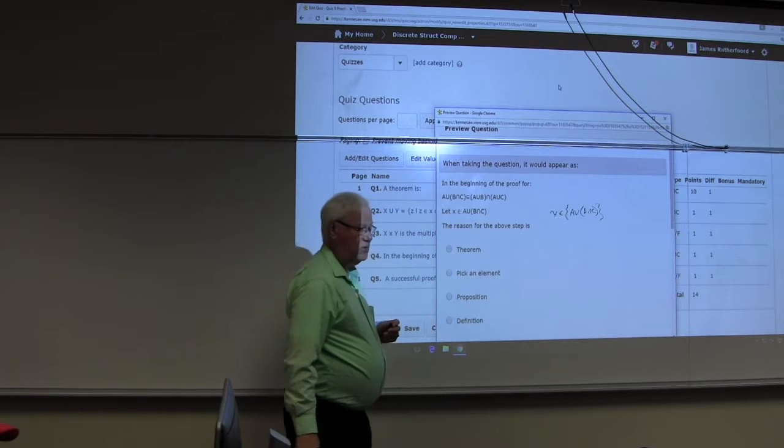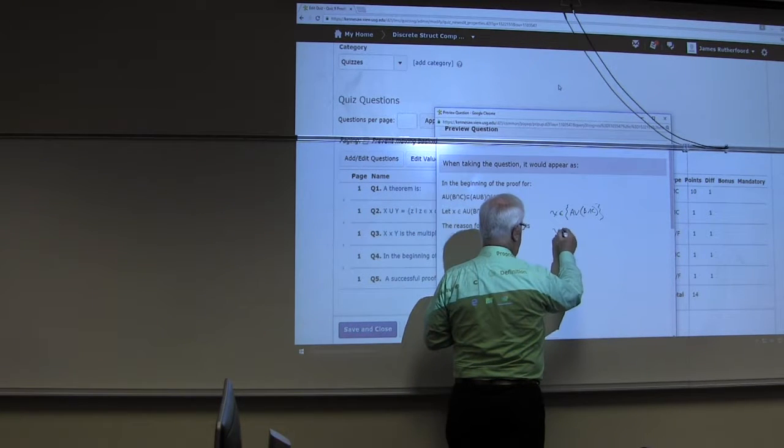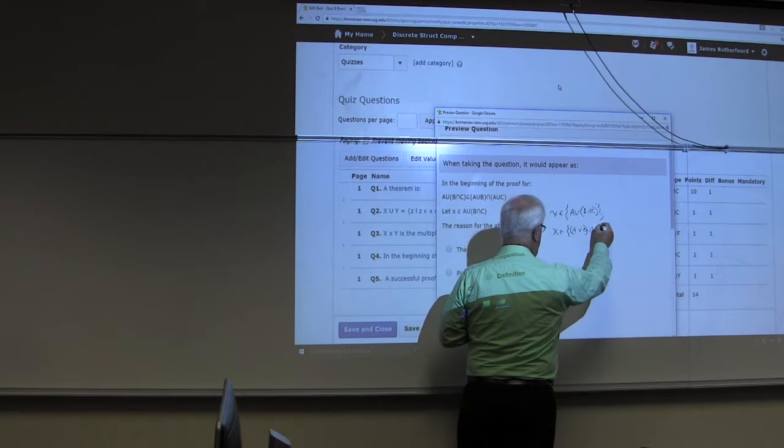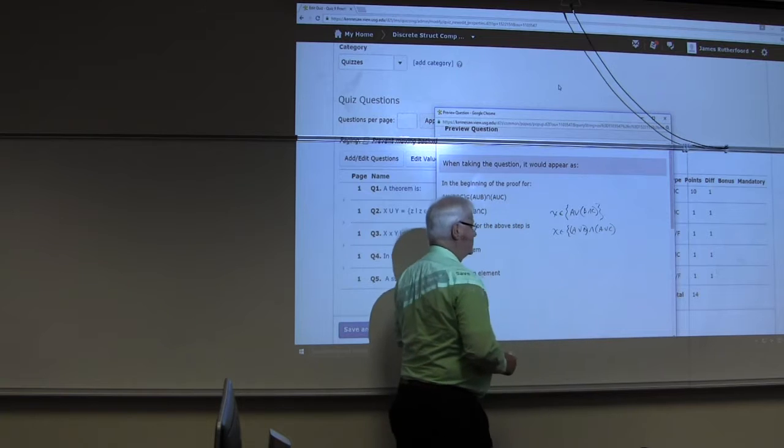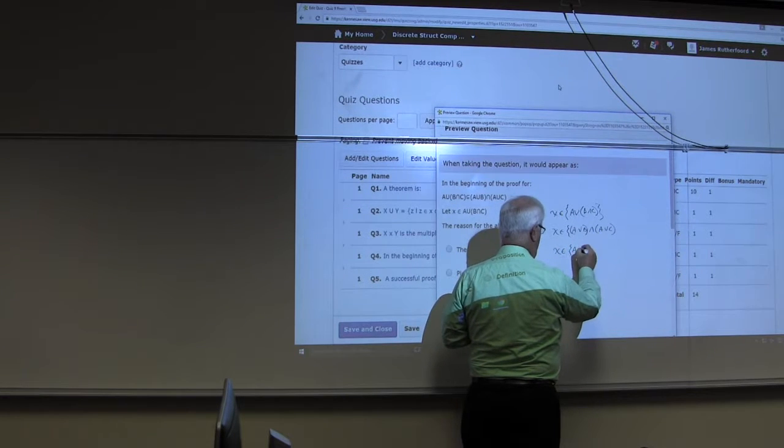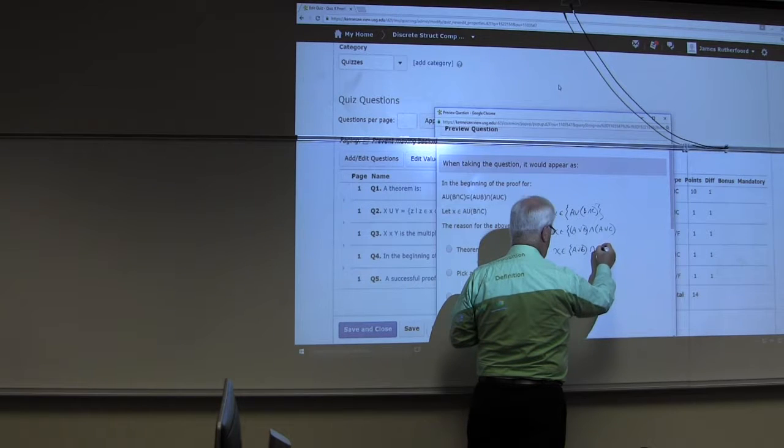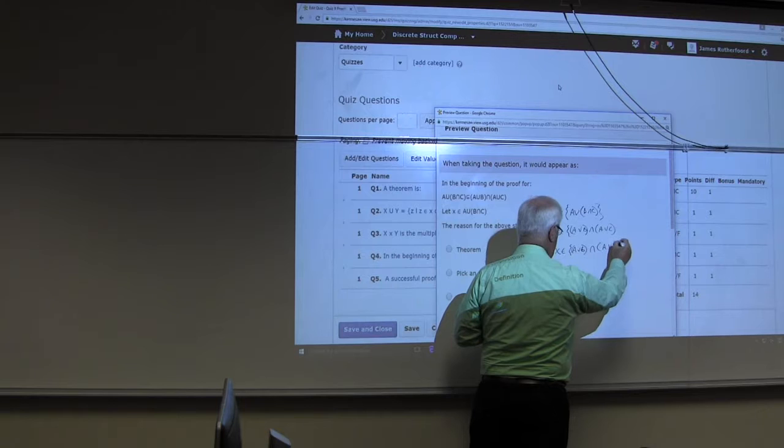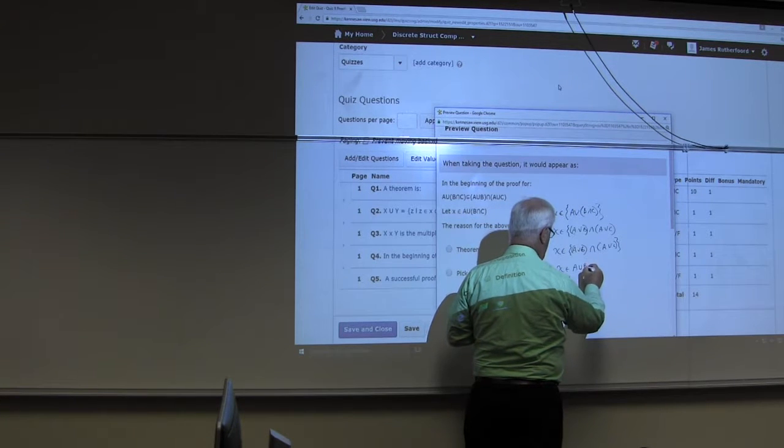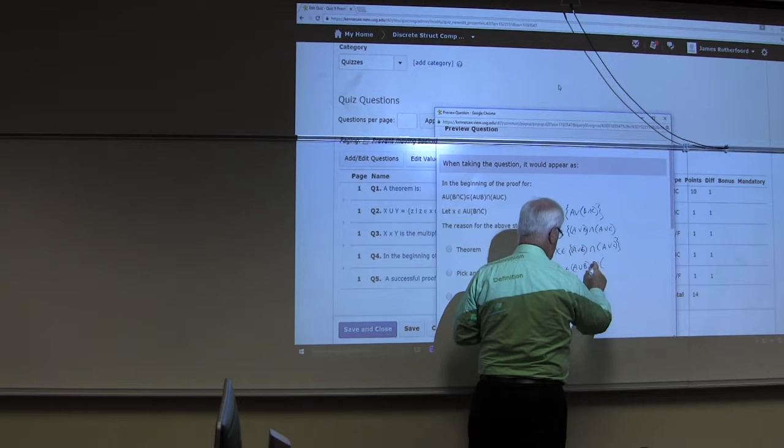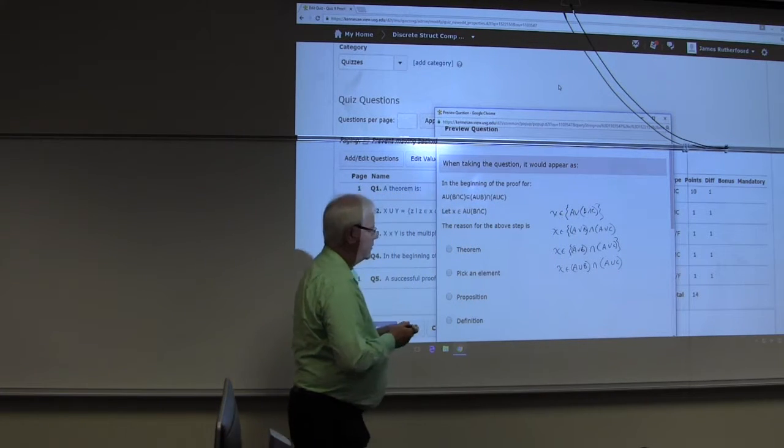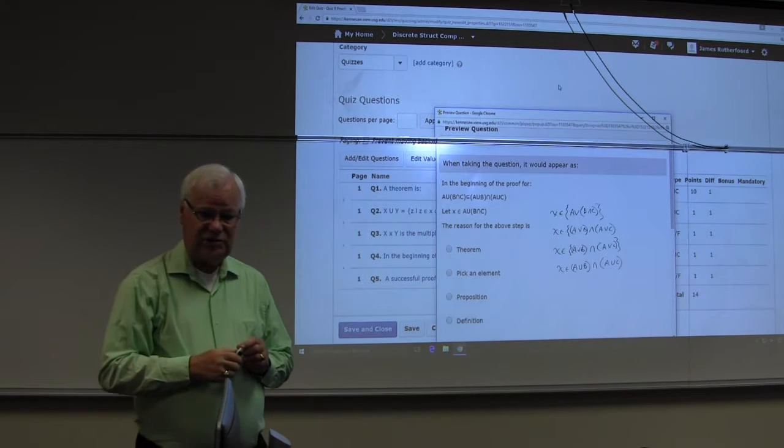Now, you can use rules of logic because you can distribute this. So this is x is an element of a or b and a or c. But what does that mean? Well, now, x being an element of that, that means x is an element of a or b intersect a or c. And because that, you can say x is an element of a union b intersect a union c. And that's what you're trying to prove. So that's how that proof would go. Did everybody see that?